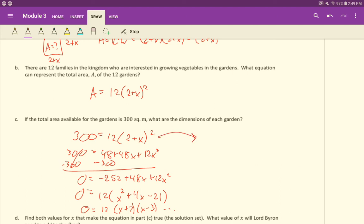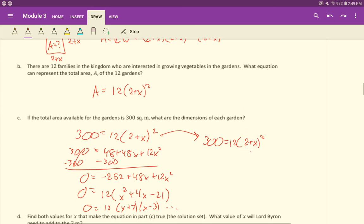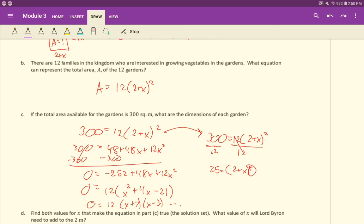However, because of the way this is written, we could also solve this a different way. Because we have this quantity being squared right here, we can actually isolate this quantity. This is the only x we have right now in our equation. So let's divide both sides by 12. Let me just show you this alternative way to solve here. 300 divided by 12 is 25. And now what should we do to continue solving? Well, we want to get rid of this square. How do you get rid of a square? We square root.